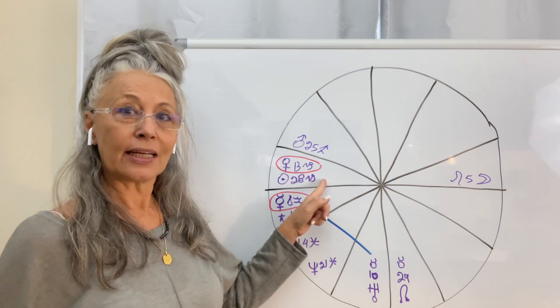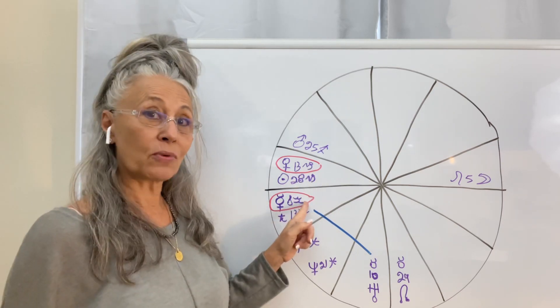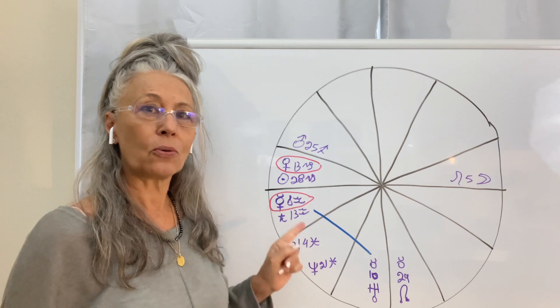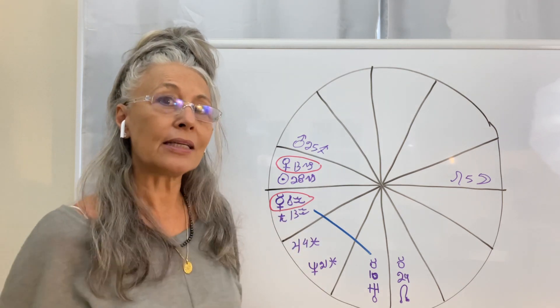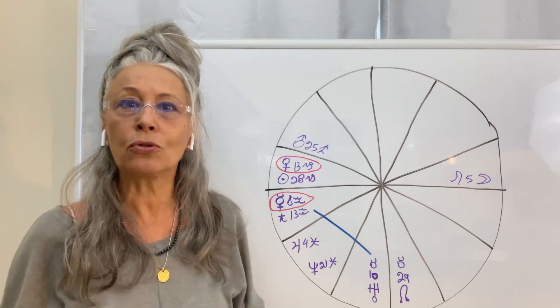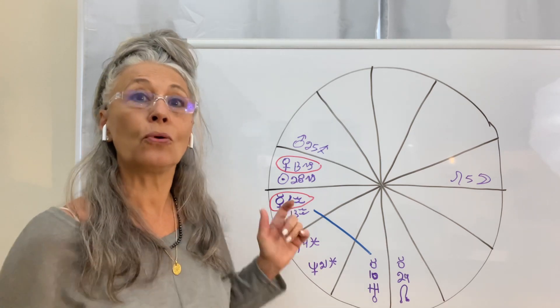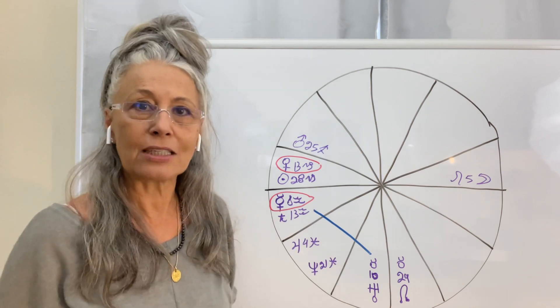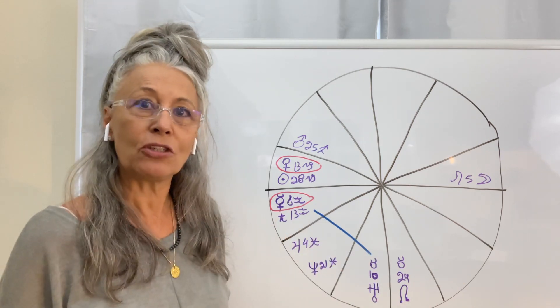Venus is still retrograding in Capricorn. Mercury is retrograding in Aquarius. Mercury in Aquarius retrograding, bringing us information that we need to use right now that we may have overseen or overlooked or didn't pay attention to. So Mercury, always the messenger, is going and bringing that information so we can use it.